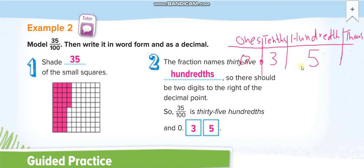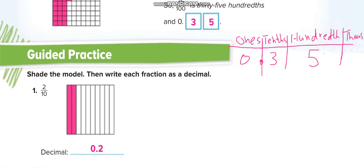So zero point thirty-five is how we write it as a decimal. The total number of boxes is one hundred; we divided one whole into a hundred parts and shaded thirty-five. How do we read it? Read the number 35, and the place value of the last digit is hundredths — so we read it: thirty-five hundredths.